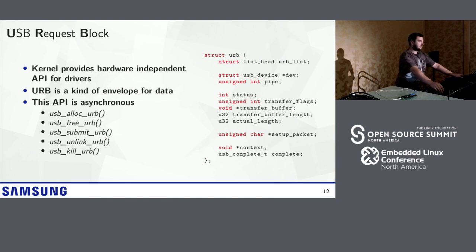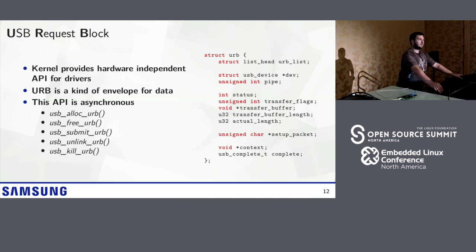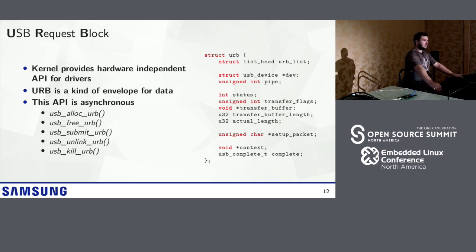The structure which describes a USB transfer in the Linux kernel is called a USB Request Block (URB). It is a kind of envelope for data that drivers fill in and schedule to be sent by the USB controller. Inside the URB structure you have a pointer to the device, the address of the endpoint, the buffer, the size of the buffer, and the completion routine. In general, all USB drivers are asynchronous — you put data in the buffer, schedule it to be sent, and wait for the completion callback.